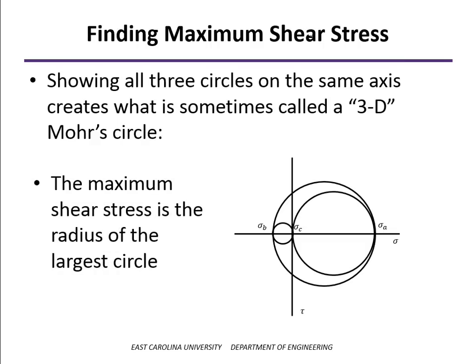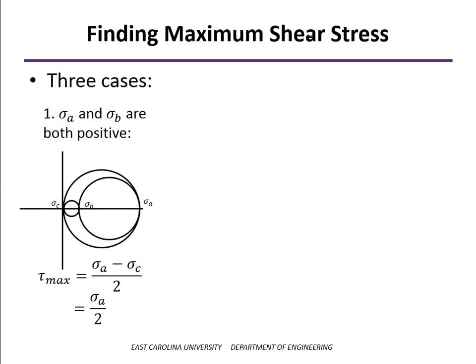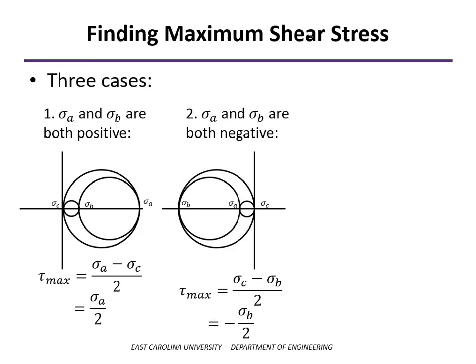Because the maximum shear stress is the radius of the largest circle, even for a state of plane stress, the maximum shear stress may occur out of plane. To find it, we find the radius of the largest circle — and there are three cases. First case: sigma a and sigma b are both positive, so sigma c (equal to zero) is the smallest, and the maximum shear stress is sigma a divided by 2. Second case: sigma a and sigma b are both negative, so sigma c is the largest, and the maximum shear stress is minus sigma b over 2, which is still positive.